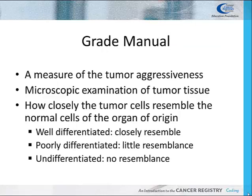The tumor grade is a measure of the aggressiveness of a tumor. The pathologist's microscopic examination of tumor tissue determines the grade. The most common way to define grade is an assessment of how closely the tumor cells resemble the normal cells of the organ of origin. Well-differentiated tumor cells closely resemble normal cells, while poorly differentiated and undifferentiated tumor cells are disorganized and abnormal looking — with poorly differentiated bearing little resemblance and undifferentiated having no resemblance to normal cells. Tumor grade is an important prognostic indicator, so it is critical that the cancer registrar codes these data items correctly.